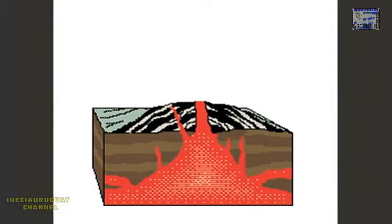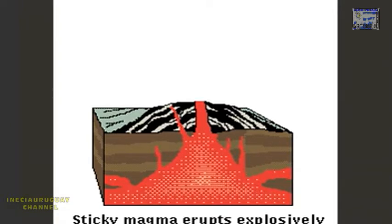Volcanic eruptions can be described as explosive or quiet. When the magma is sticky and contains lots of gas, then eruptions tend to be explosive.